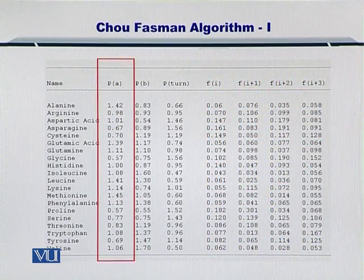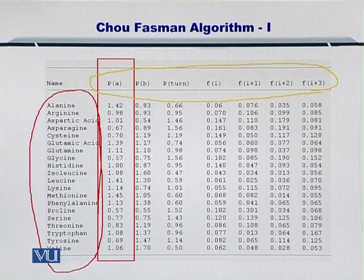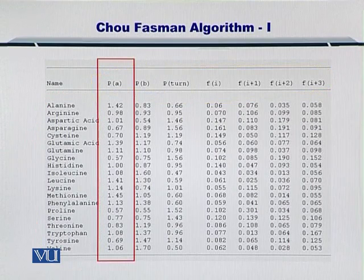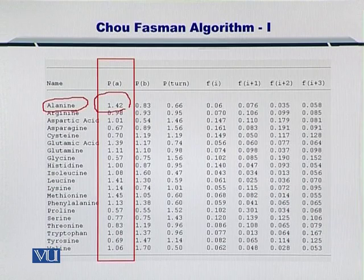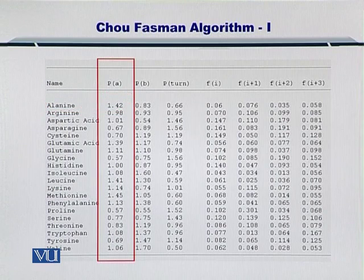Here in this table, you can see that all the amino acids are listed on this side and their propensities for forming an alpha helix, and their propensity for forming a beta sheet turn is given here. So if you want to look at the propensity of alanine to form an alpha helix, then it is 1.42 as per the Chou-Fasman algorithm. Remember that this data is from their original work, so the values may have evolved and improved over the last 30 years.